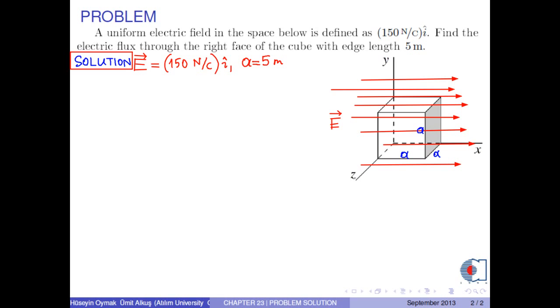Because the system is simple, the electric flux through the right face of the cube is calculated by the formula E dot A, where A is the area vector for the right face of the cube.